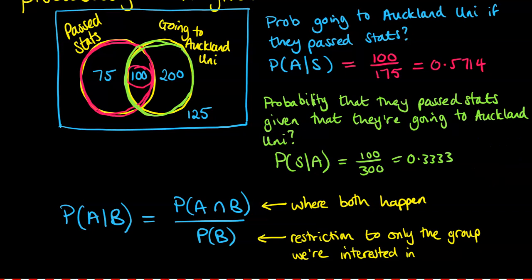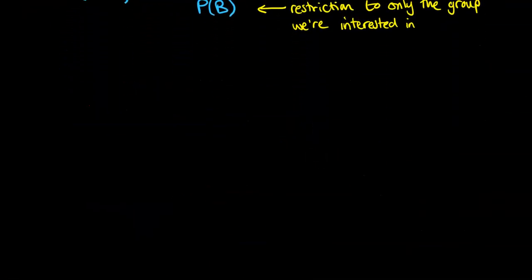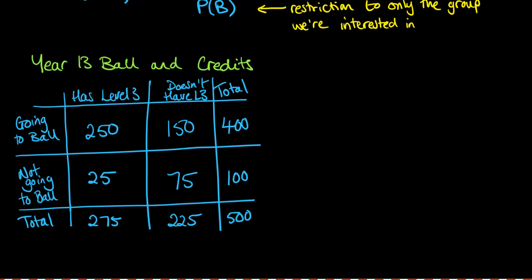For most questions, I would try to set it up as a diagram and think about it intuitively like we did to begin with. But this formula does get given to you on your formula sheet, so if you're happy using that, go ahead. I'll do another example and set this up as a table so you can see how to do it that way as well. Mr. Hall decides to look into the year 13s that have bought tickets for the ball and that haven't, and how many credits they've got in terms of whether they've got level 3 or not.